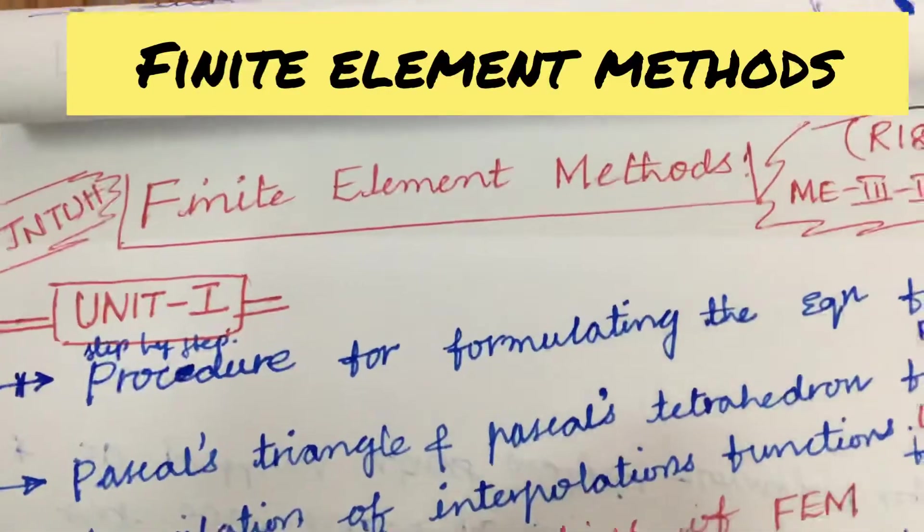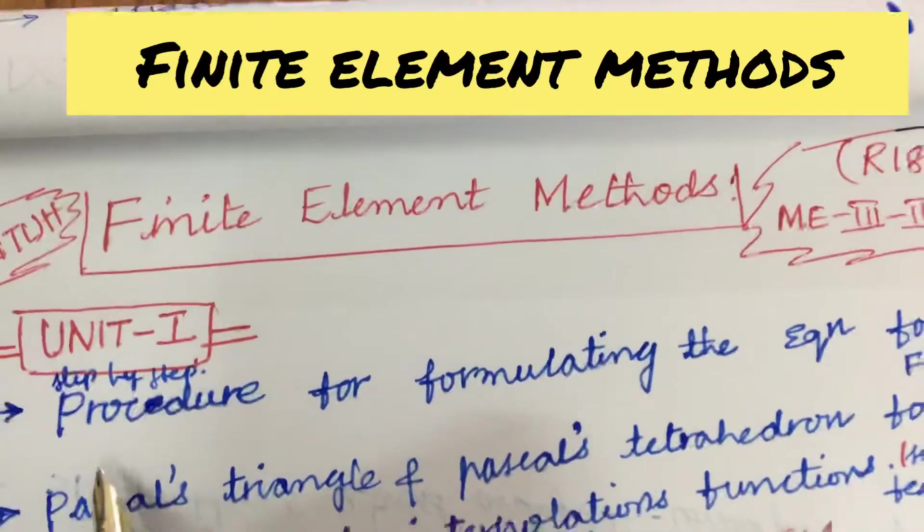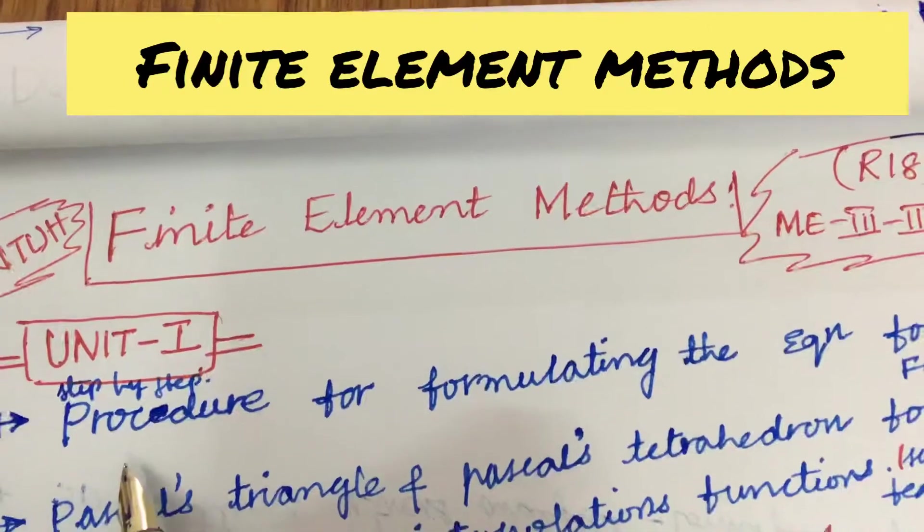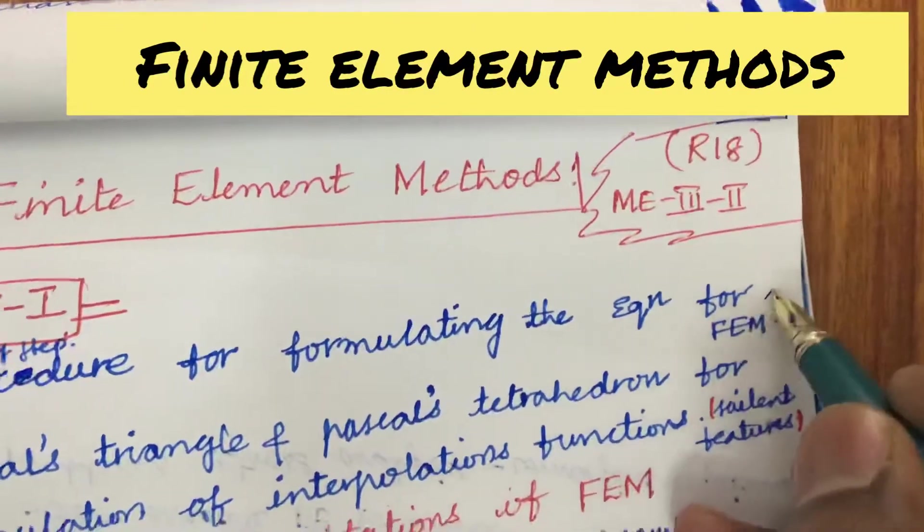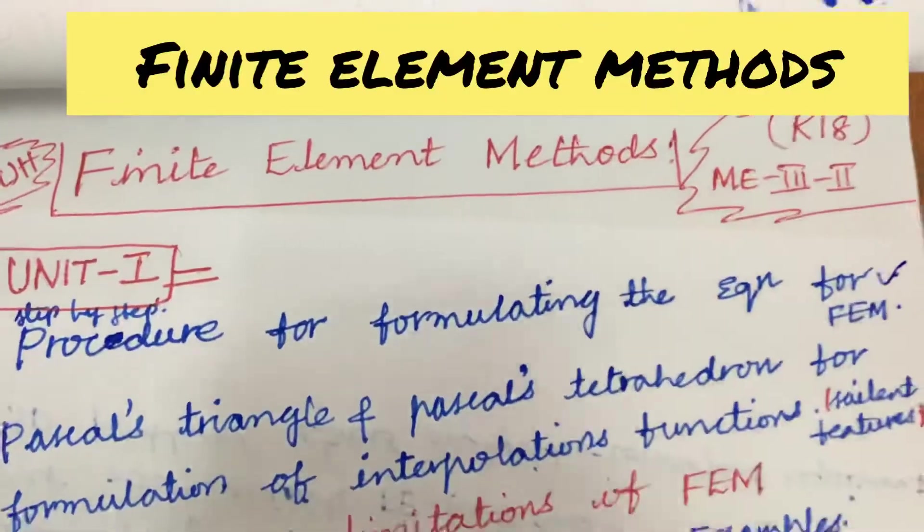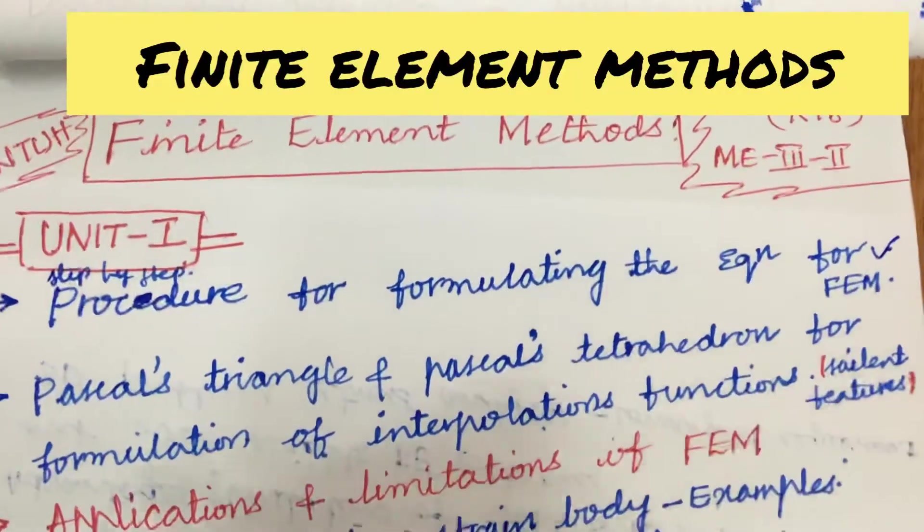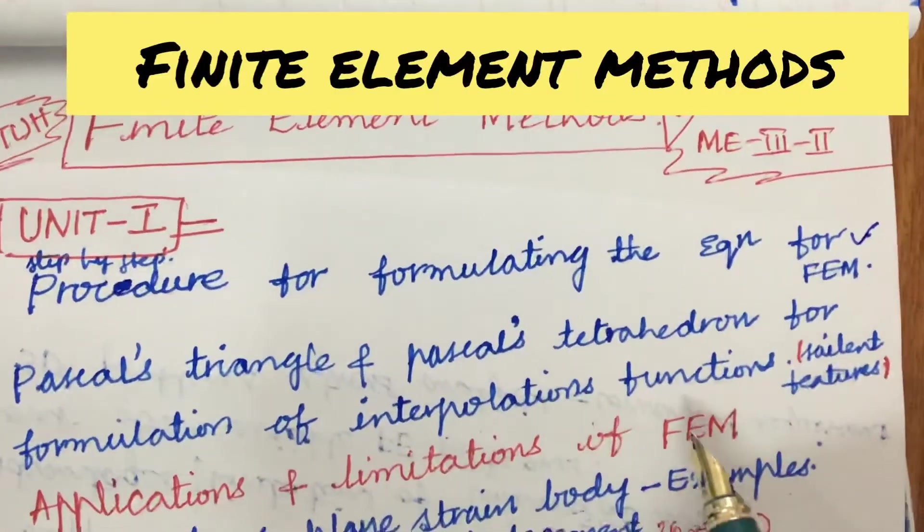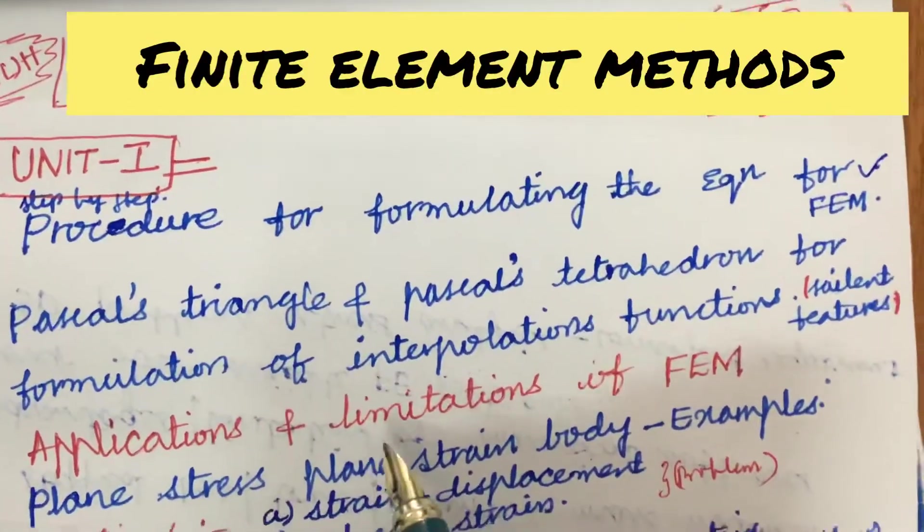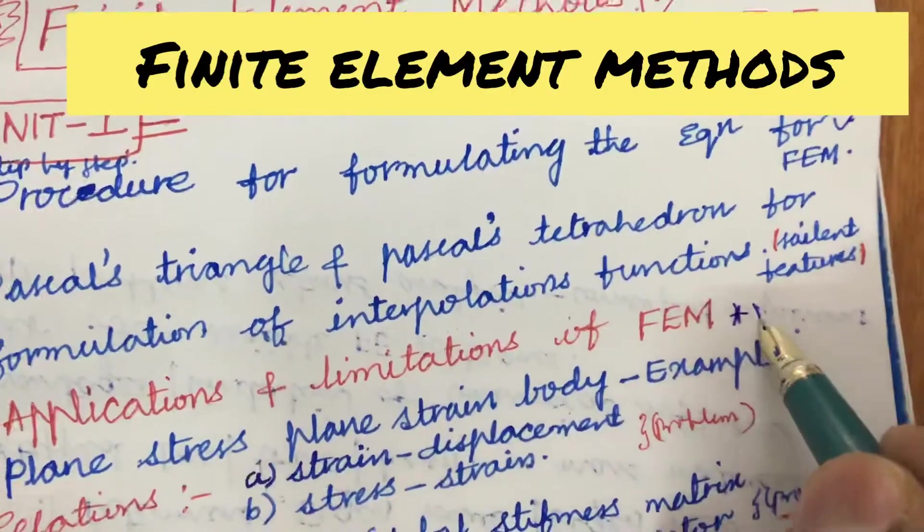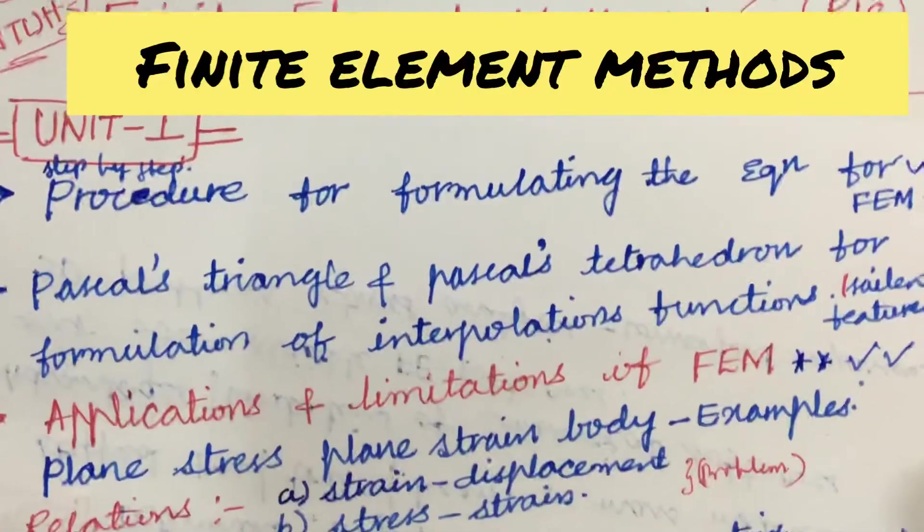Let us look at Unit 1. The important questions I have sorted out are: first, explain the step-by-step procedure for formulating the equation for finite element methods. This may be a seven mark question. Later, Pascal's triangle and Pascal's tetrahedron for formulation of interpolation functions and its salient features. Later, the applications and limitations of finite element methods is asked many times and we can expect this to be a sure question for eight marks.